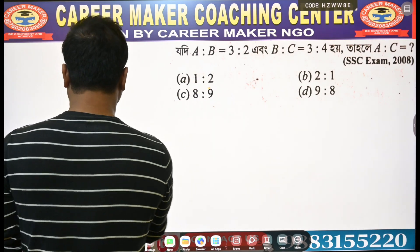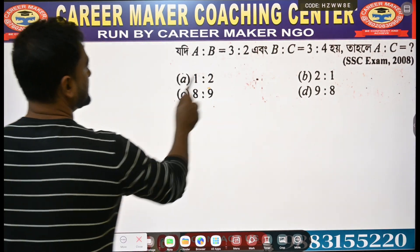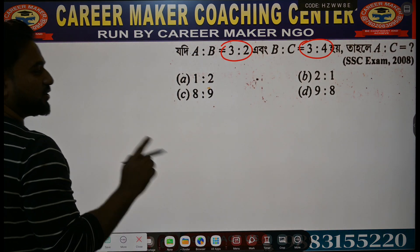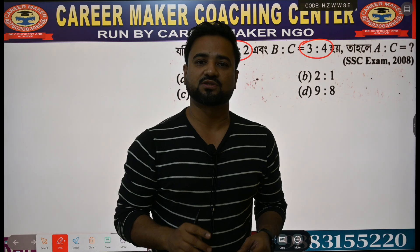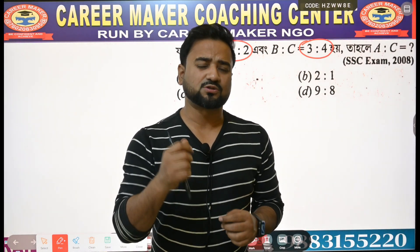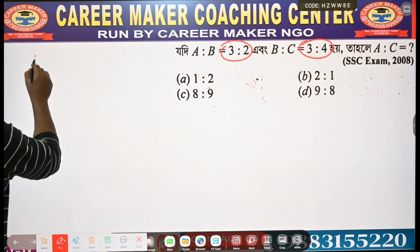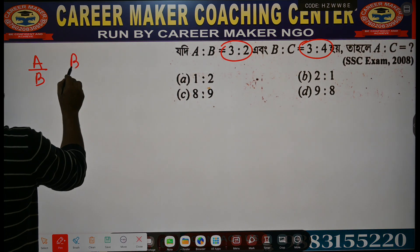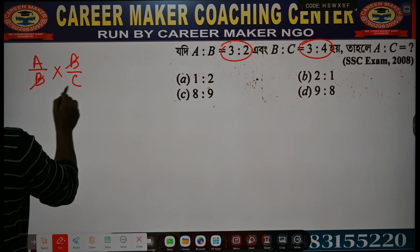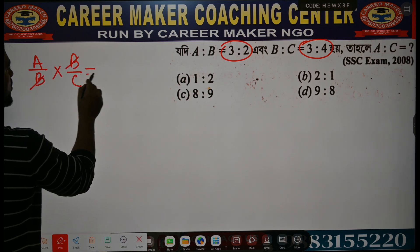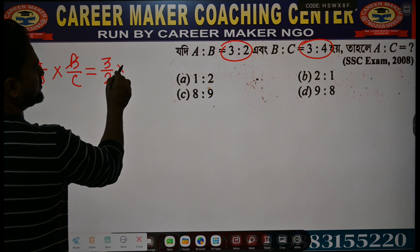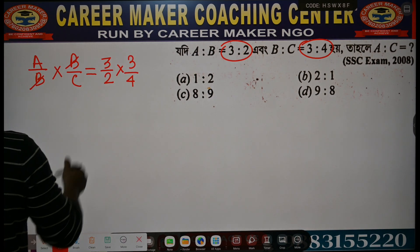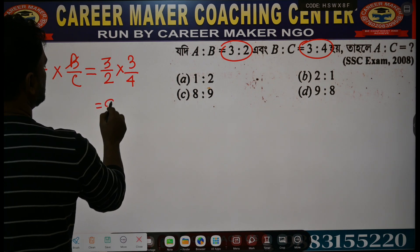First problem: a is to b equal to 3 is to 2, and b is to c equal to 3 is to 4. Find a is to c. The meaning of a is to b is a by b, and b is to c means b by c. So a is to c — multiply: 3 by 2 into 3 by 4 gives 9 is to 8.